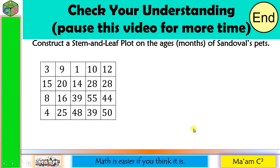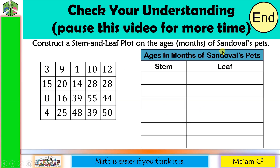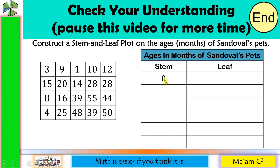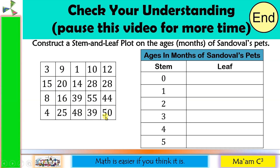Let us create the stem and leaf plot. The title is 'Ages in Months of Sandoval's Pets,' and we have two columns: stem and leaf. By inspection, we have one-digit and two-digit numbers. For one-digit numbers, the stem will be zero. For two-digit numbers, we have stems 1, 2, 3, 4, and 5.